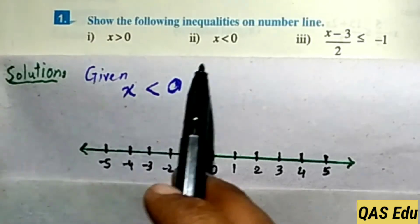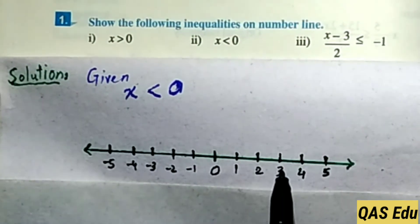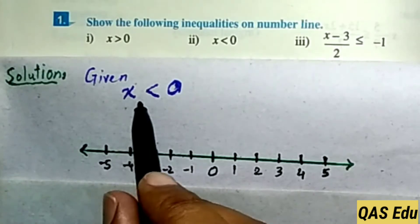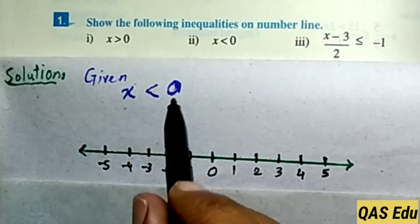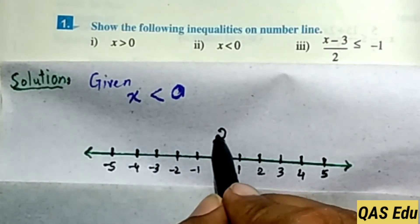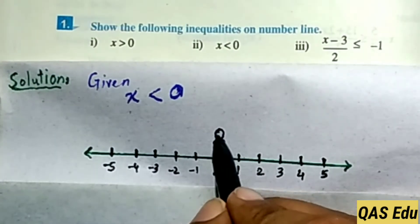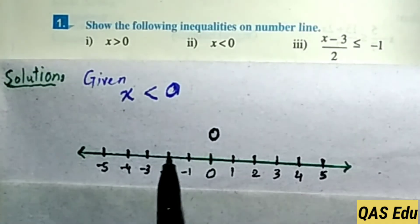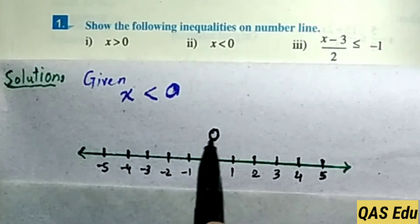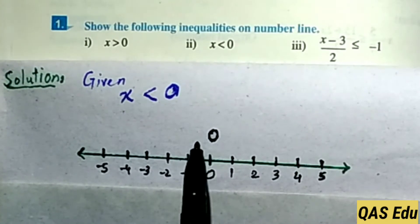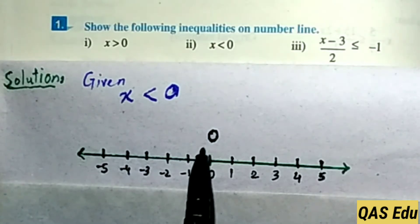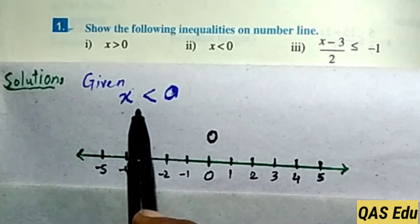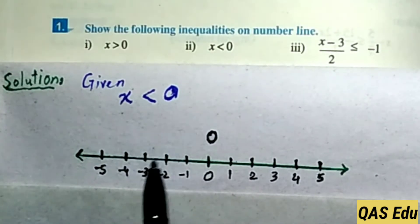Part 2: x is less than 0. Draw this on the number line. Since x is any number less than 0, and 0 is not included, draw an empty open circle at 0. We should not shade it because 0 is not included — x is less than 0.